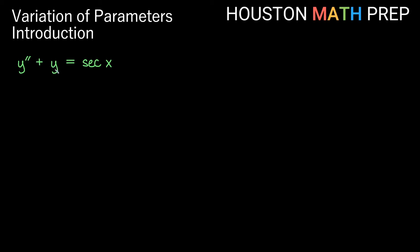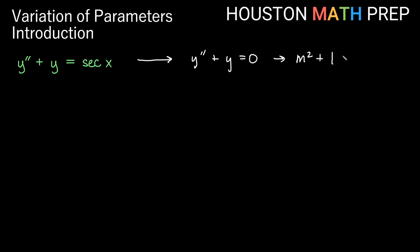We have y'' + y = sec(x). This is a good candidate for variation of parameters rather than undetermined coefficients, since we'd need a specific form for y sub p there. We solve the associated homogeneous equation y'' + y = 0. Its characteristic polynomial is m² + 1 = 0.